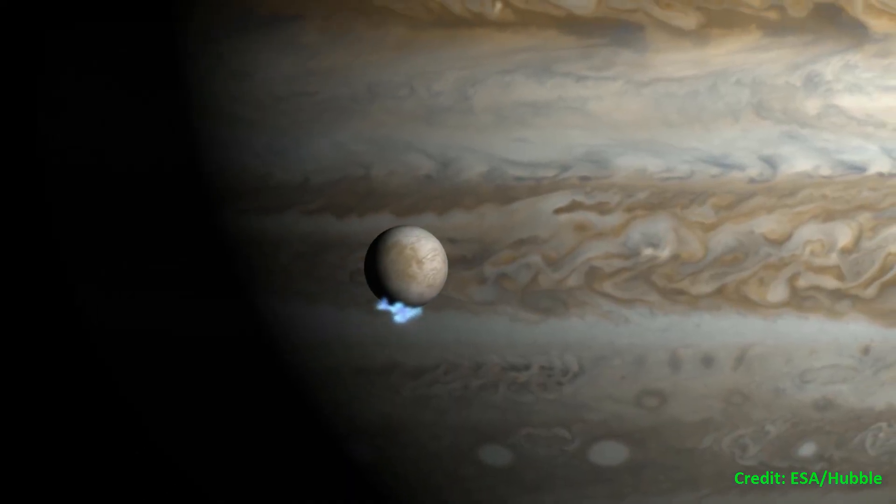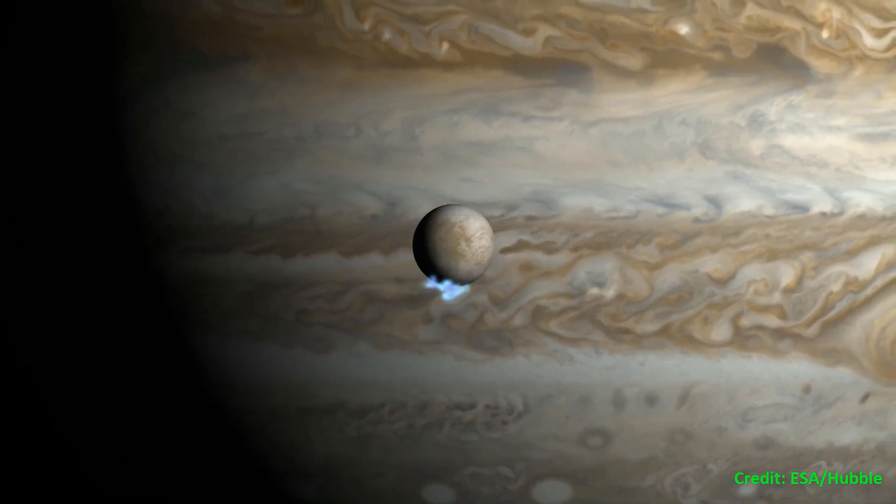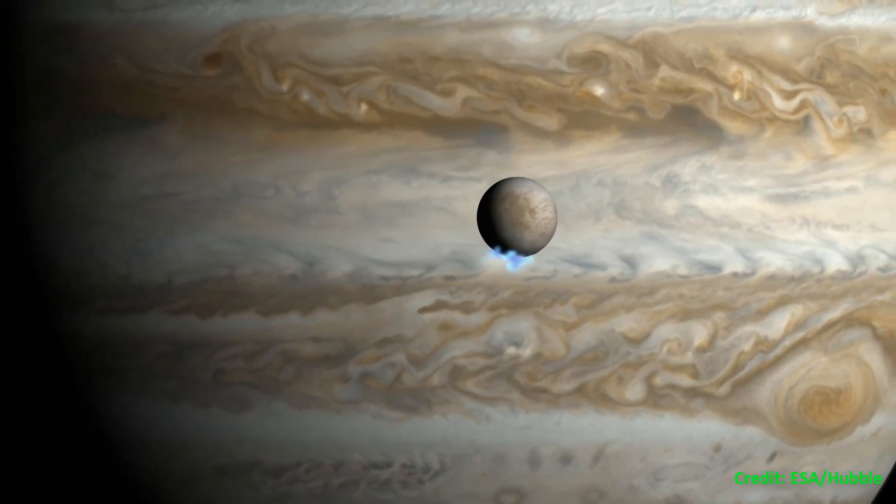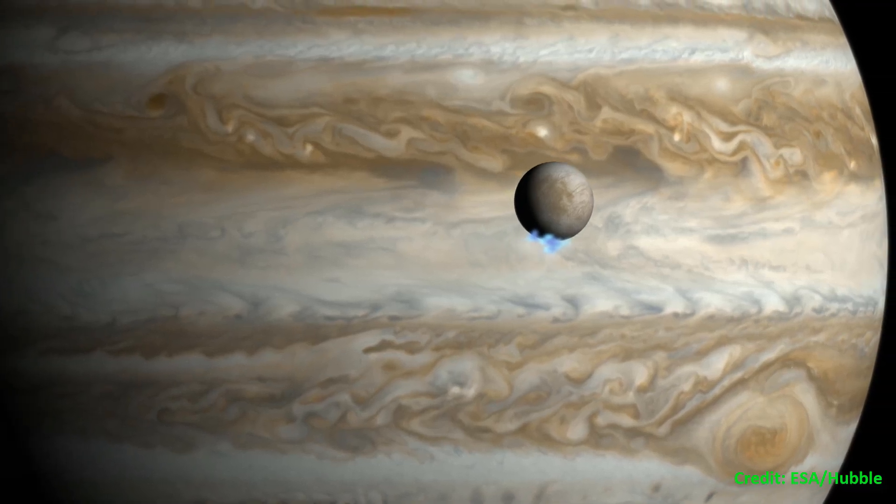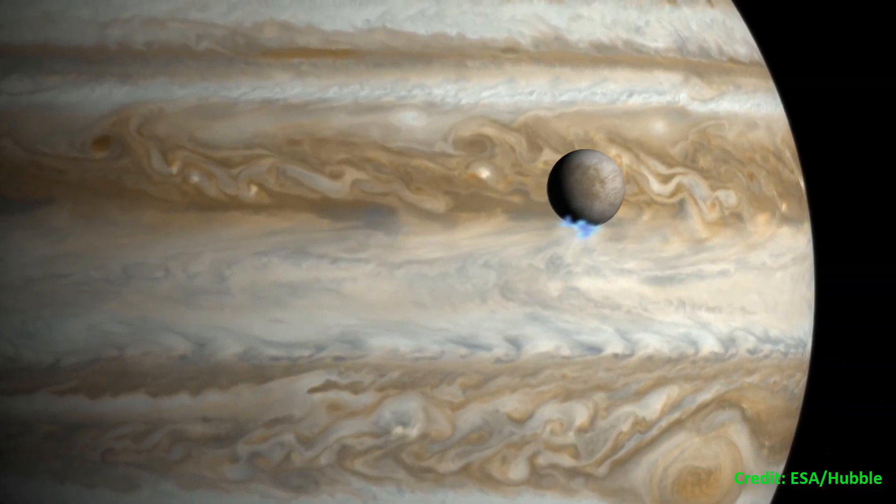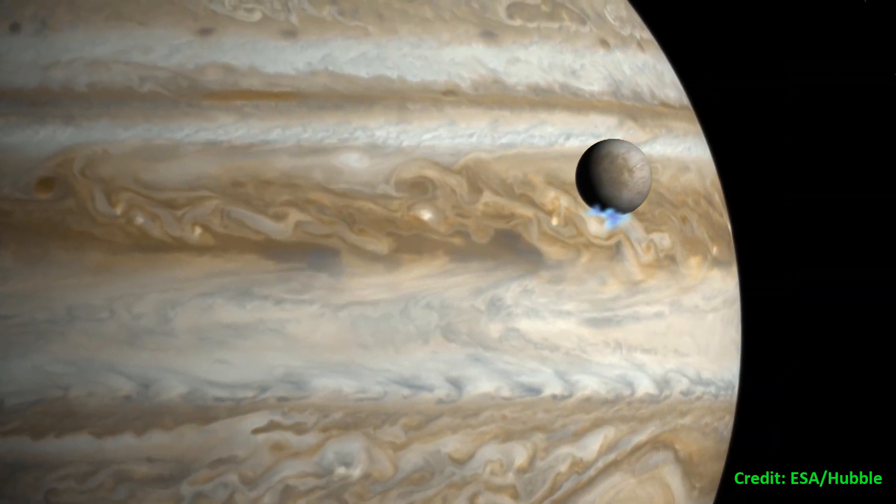In 2013, Hubble provided the first observational evidence of water vapor erupting from the frigid surface of Jupiter's moon Europa, near its south pole.